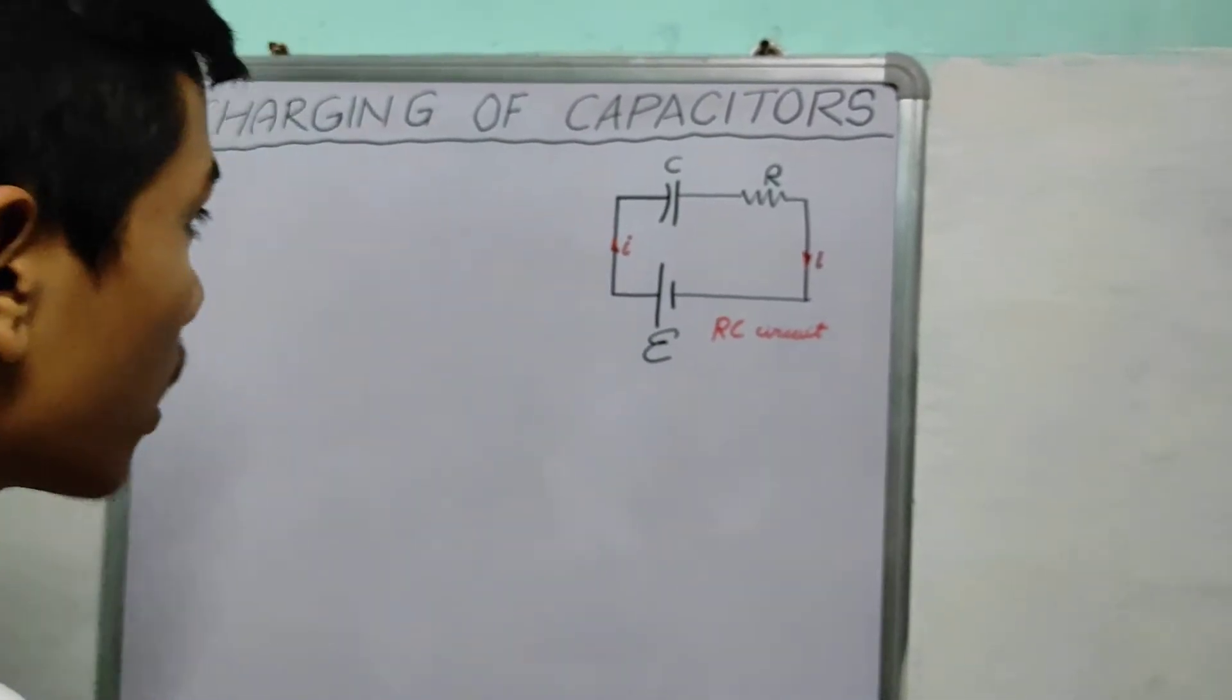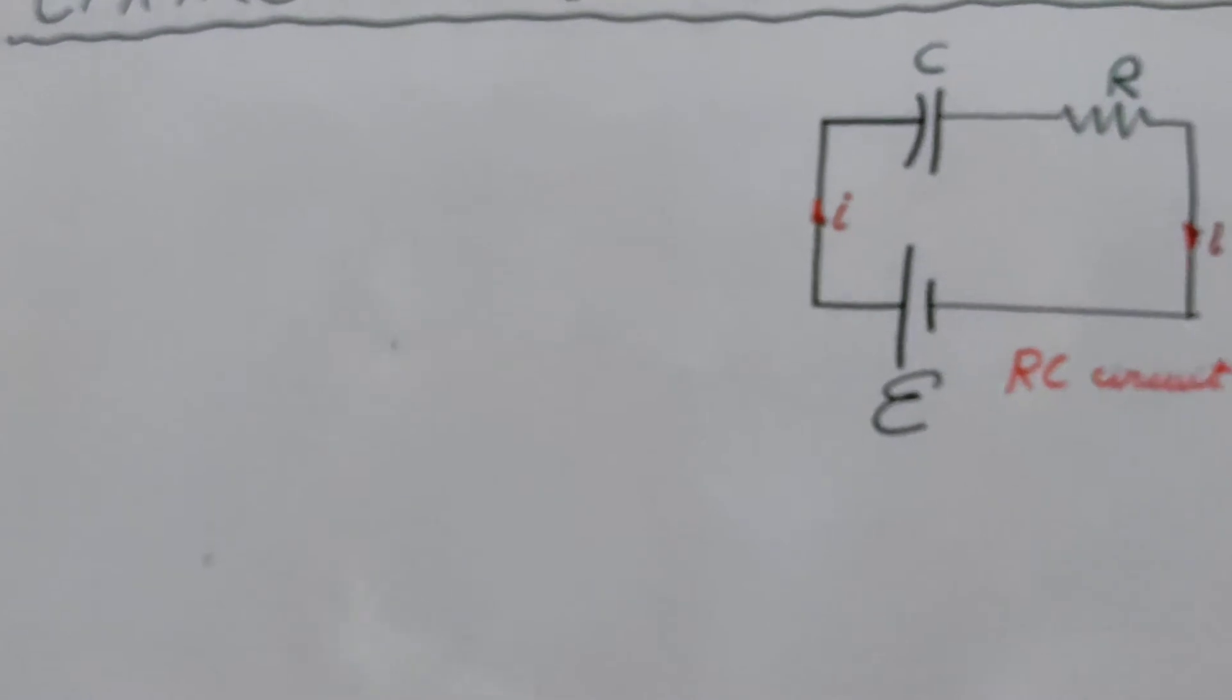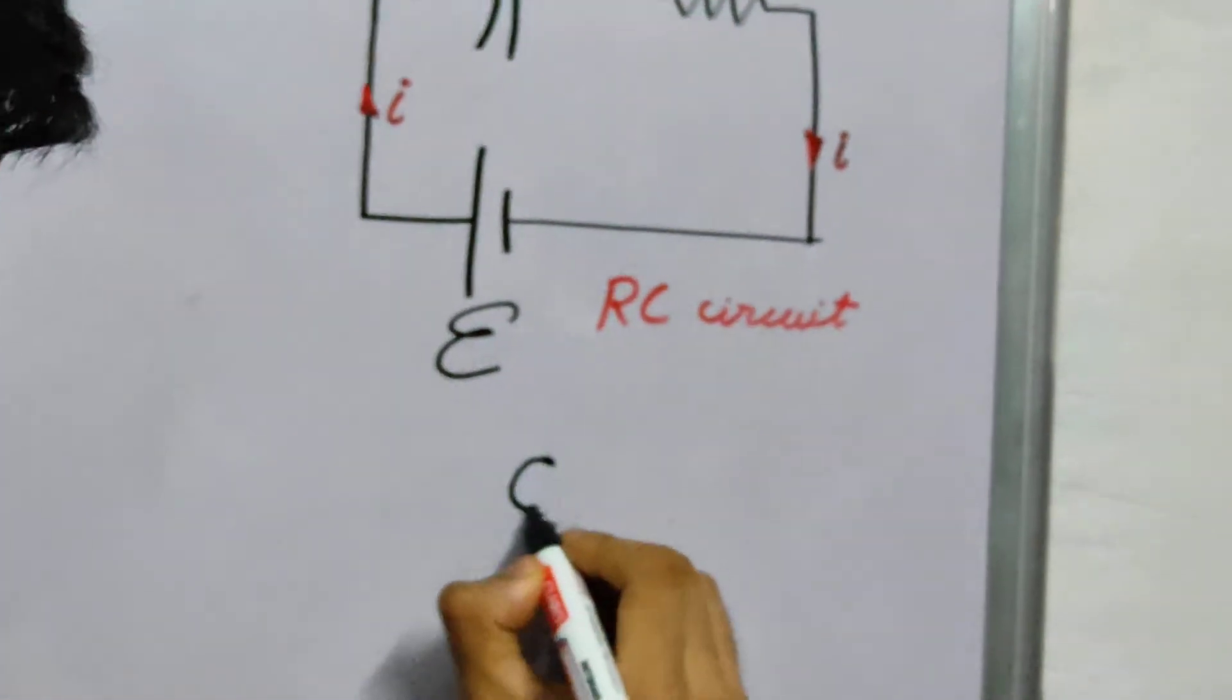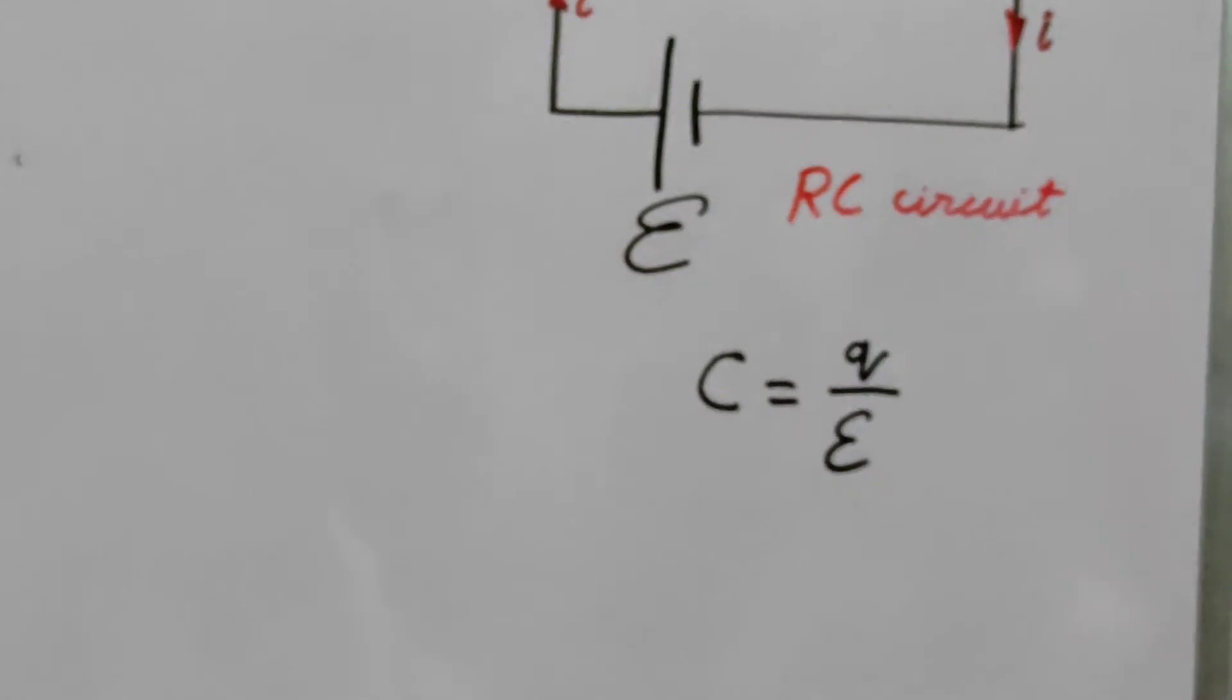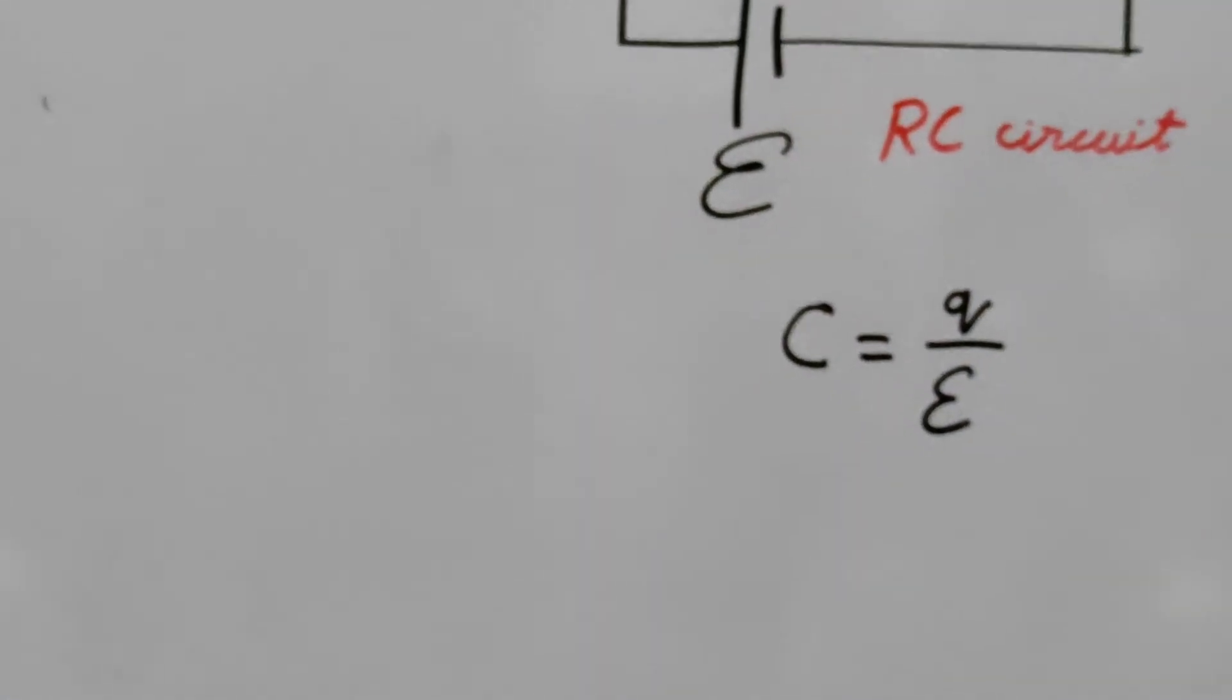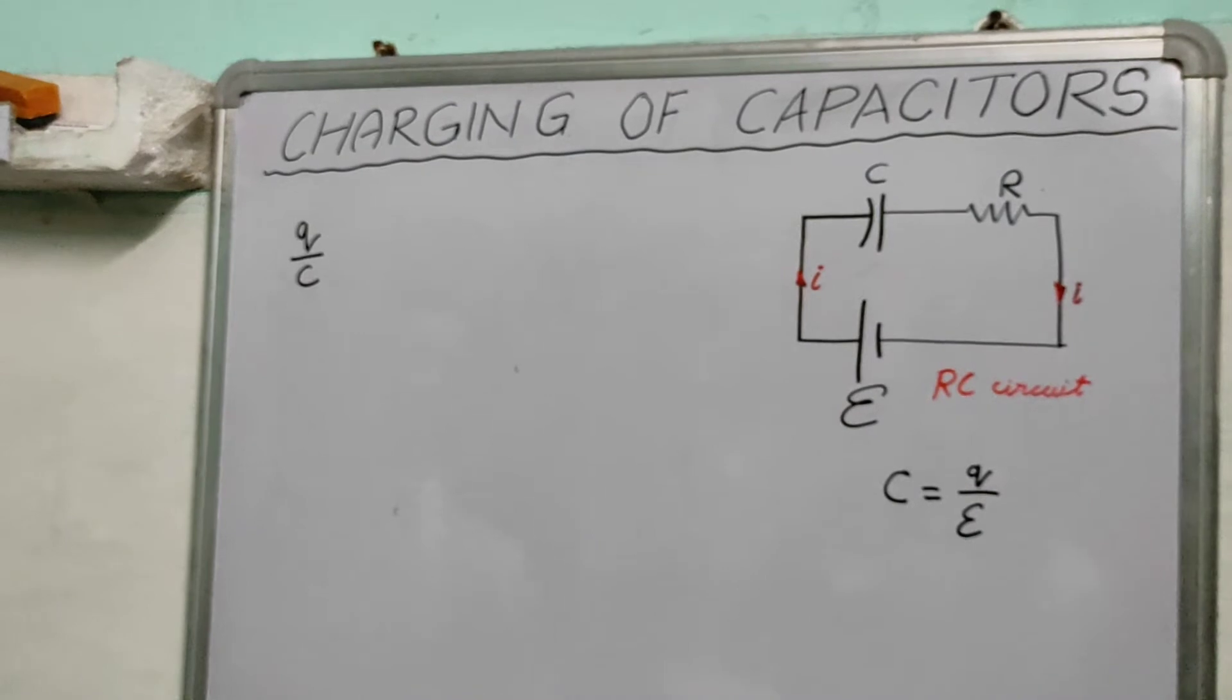What does Kirchhoff's Loop Law tell us is that there is a falling potential. So we write, the potential here is Q by C. Right. The capacitance is charged by voltage, by EMF in this case, which gives our voltage as Q by C. Fine. If there is a decrease, we write Q by C.